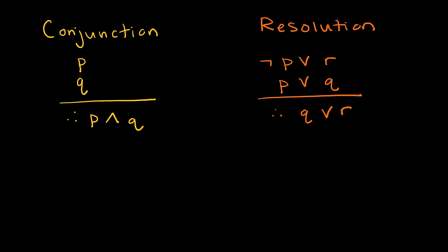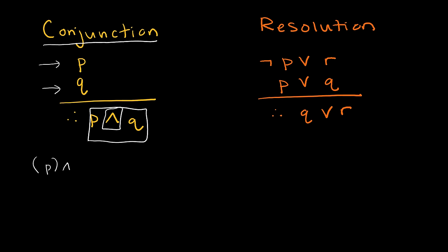Let's take a look at our last two rules: conjunction and resolution. The conjunction is super straightforward — it says the premises are that P is true and Q is true, and because both are true, P and Q is also true. That's the tautology: if P and Q as separate premises, then P and Q the conjunction is true. It gives us a name to use when working with proofs.